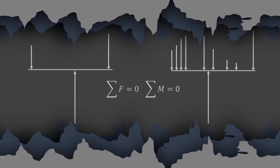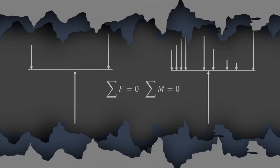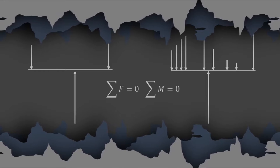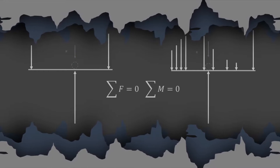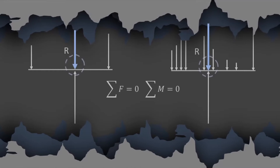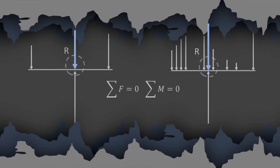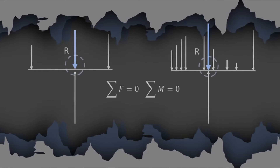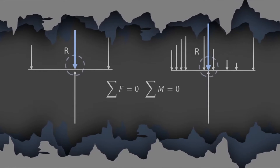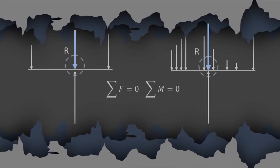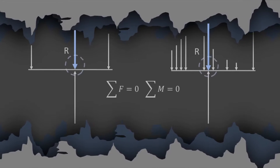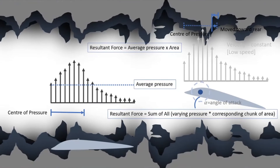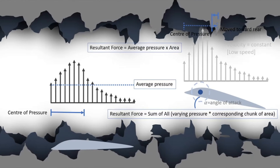All these forces acting on the body can be replaced by a single resultant force. The magnitude and position of this force are found using the equilibrium condition — that is, the sum of all forces and the sum of all moments equal zero.